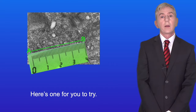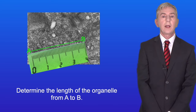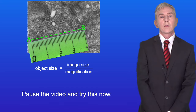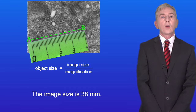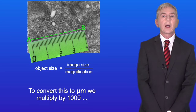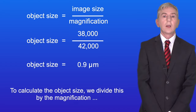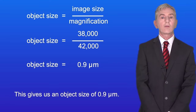Here's one for you to try. The magnification of this image is 42,000 times — determine the length of the organelle from A to B. The image size is 38 millimeters. To convert to micrometers, we multiply by 1,000, giving us 38,000 micrometers. Dividing 38,000 by the magnification of 42,000 gives us an object size of 0.9 micrometers.